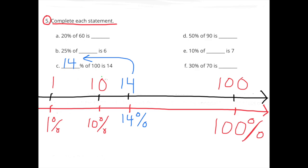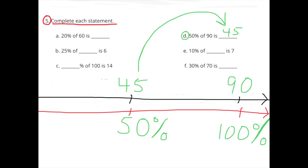C: What percent of 100 is 14? I know 1% of 100 is 1. So I multiply 1% times 14 to get 14%, and 1 times 14 is 14. So 14% of 100 is 14. D: 50% of 90 is what number? 100% of 90 is 90. Divide 100% by 2 to get 50%, and divide 90 by 2 to get 45. So 50% of 90 is 45.